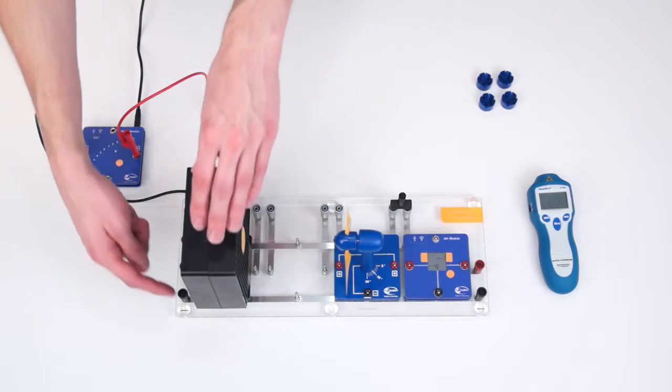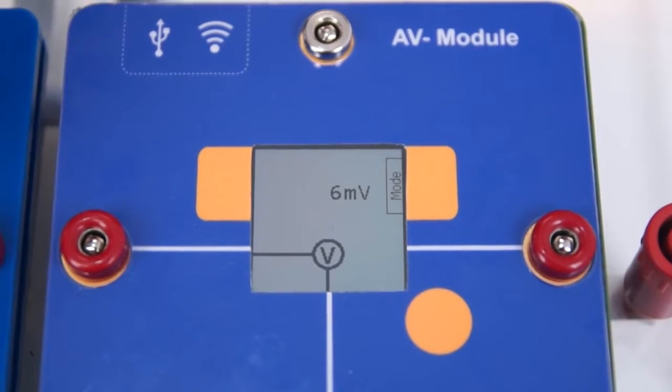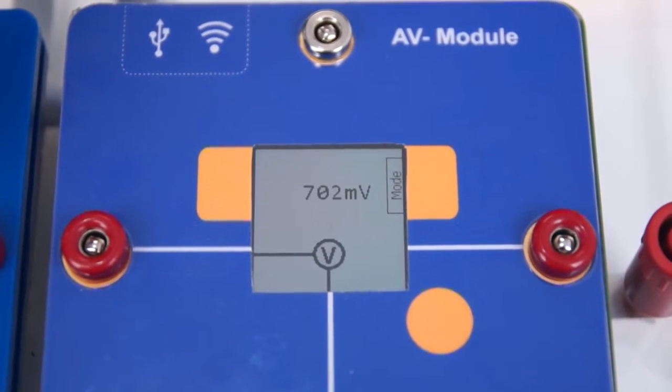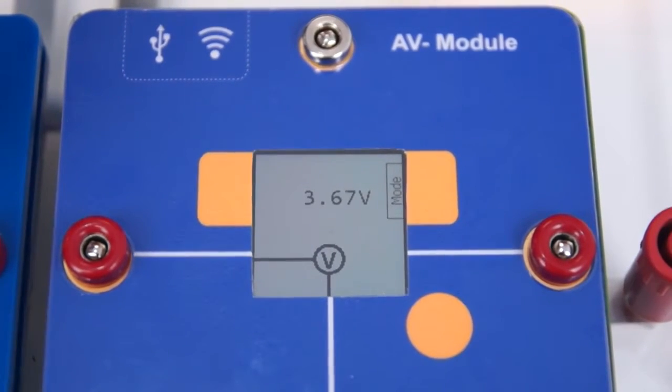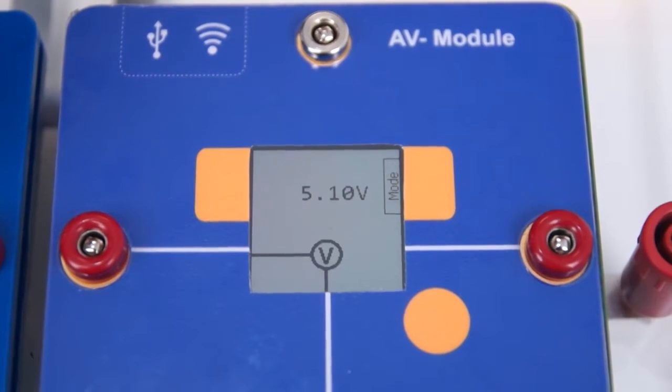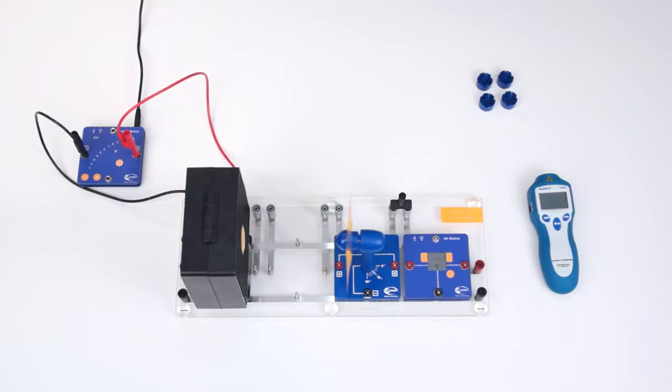Next we turn on the power module and the wind turbine and wait until the open circuit voltage remains constant. In this case the wind rotor assumed a constant rotational speed. The open circuit voltage amounts to 5.3 volts.